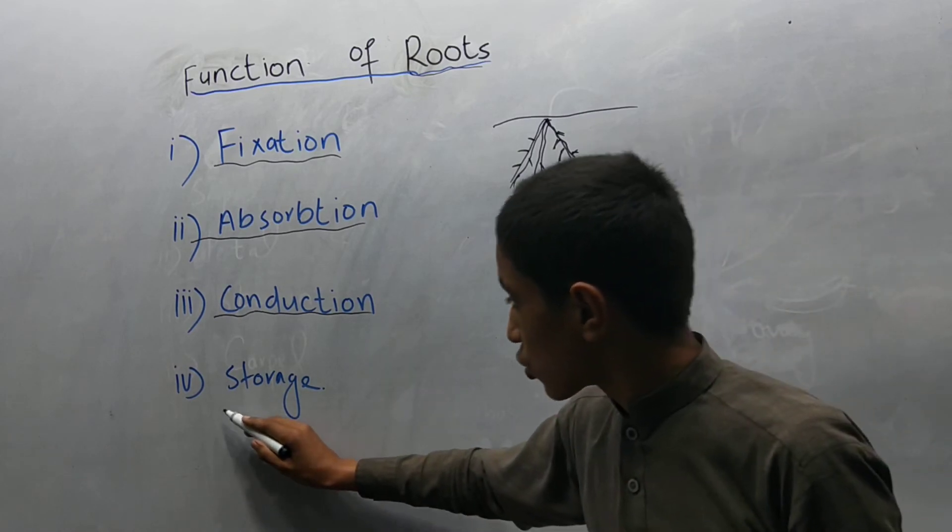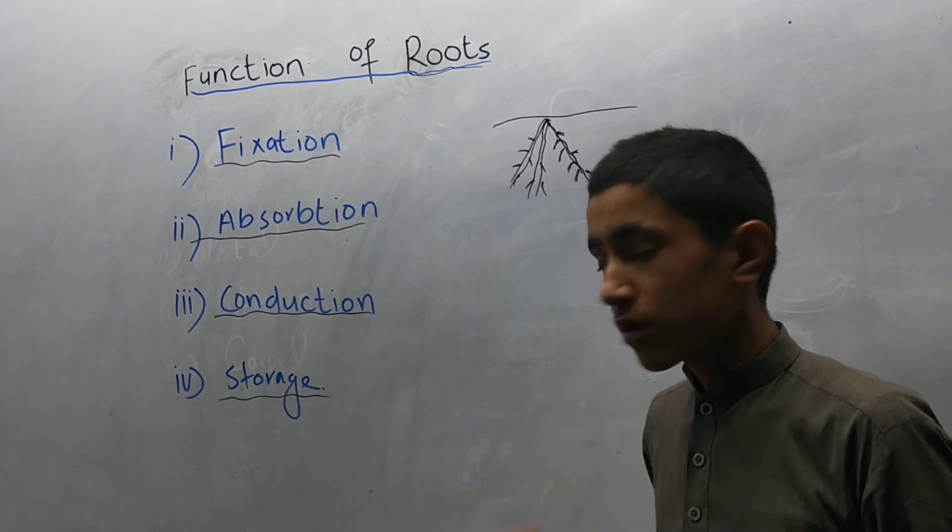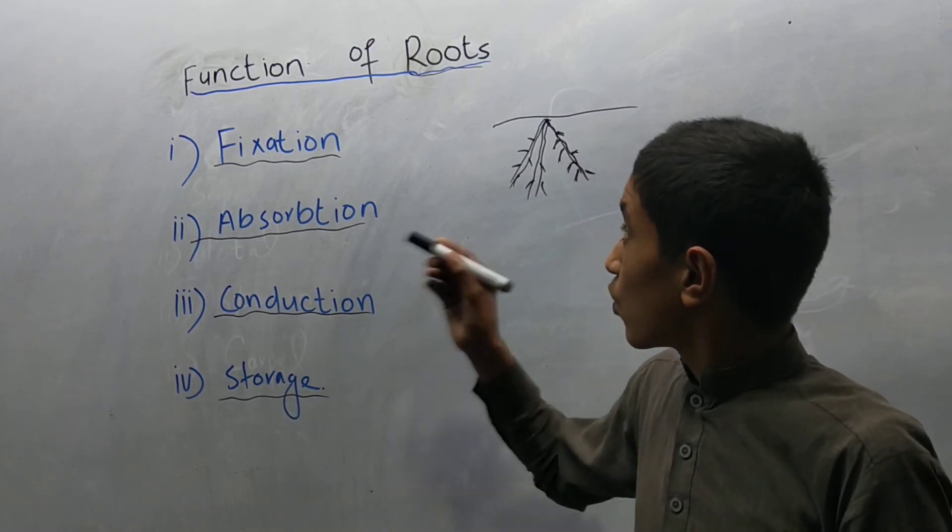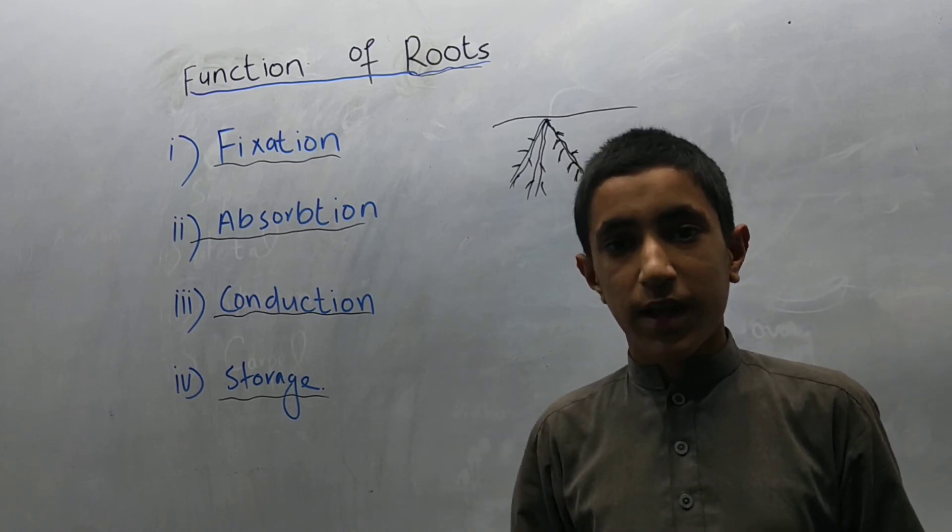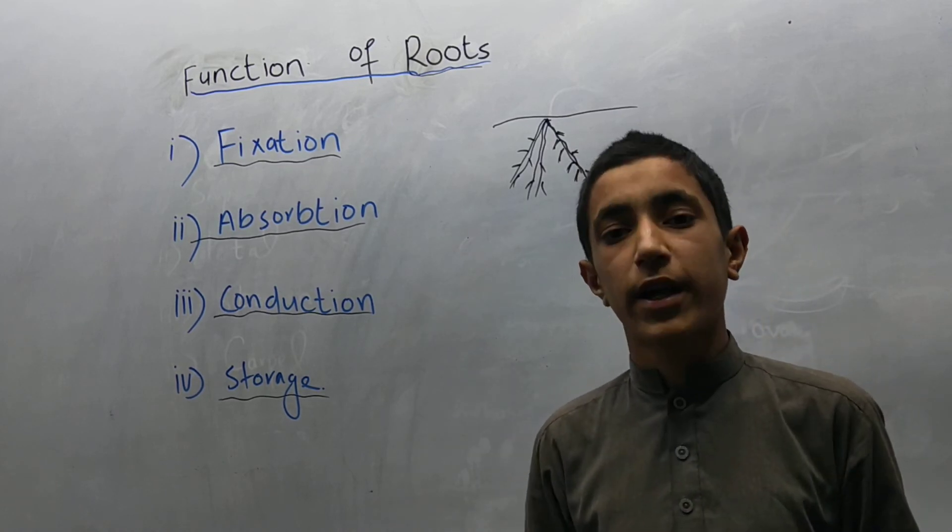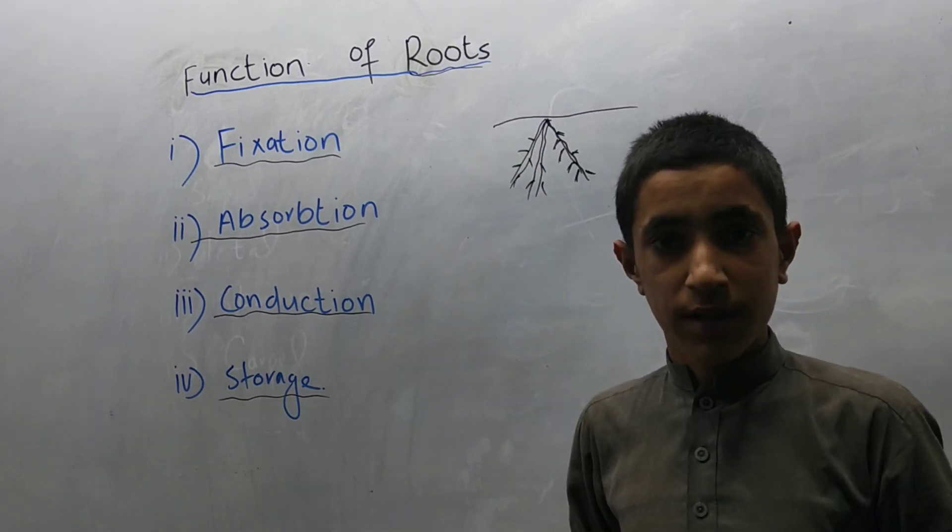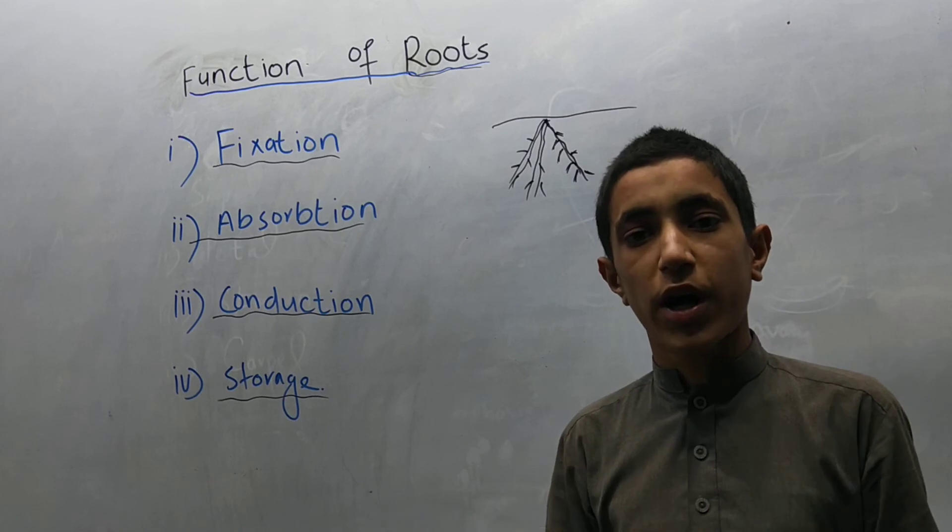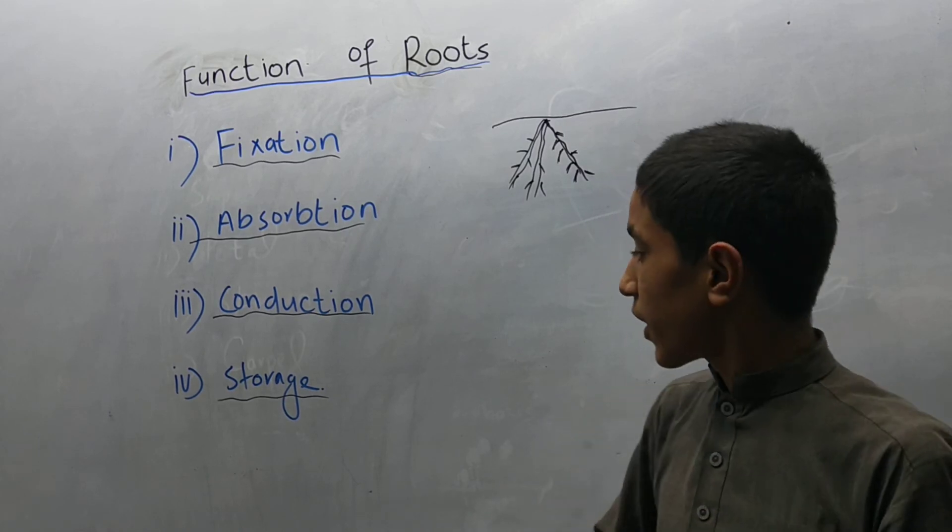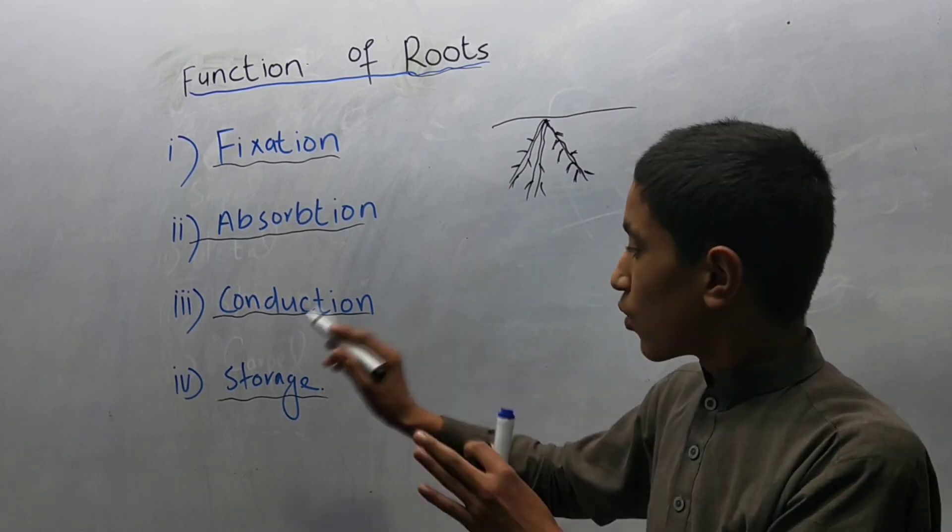The last one is storage. The root also stores food. Like if we see the carrot, we eat carrot. Basically, we eat their roots. And the roots in the carrot have carbohydrate, protein, etc. What we eat is basically the root.